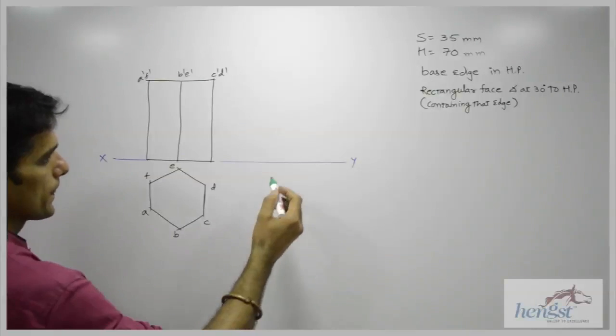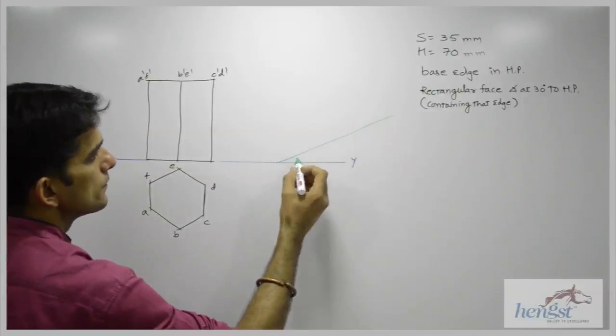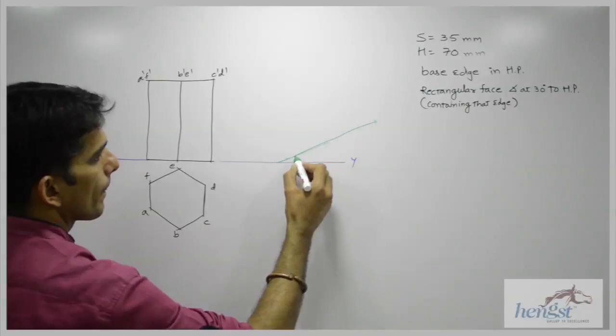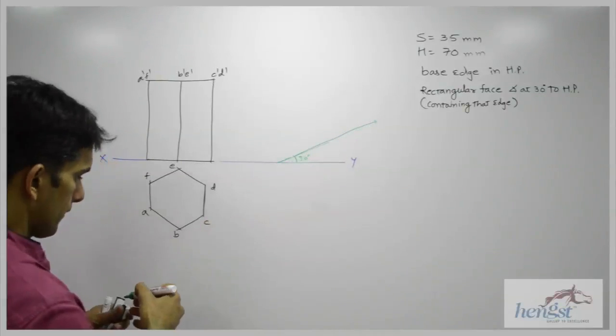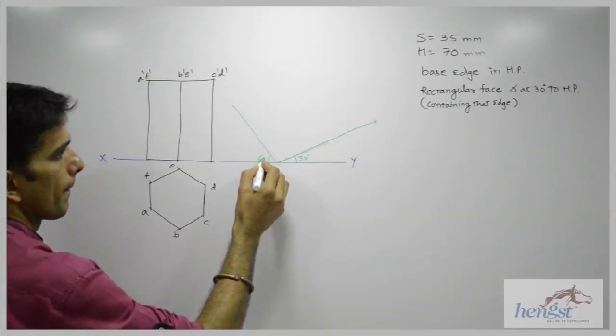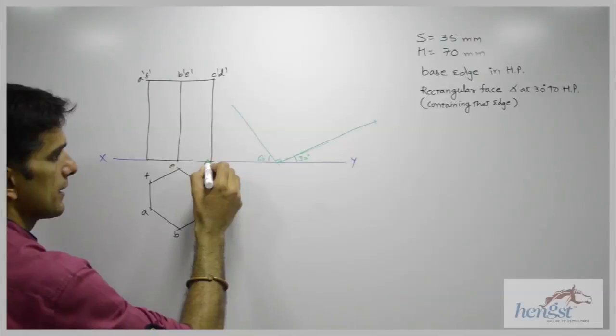So what we will do? First we will draw 30 degrees. If this is 30, this will be 60, because we want this to be 90, right?